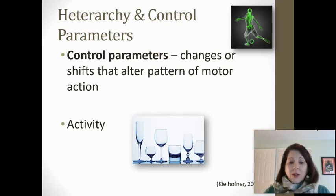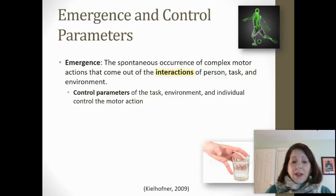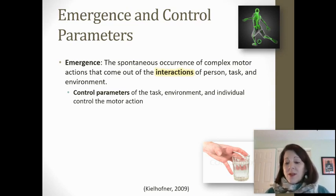Here's an activity regarding control parameters: go to the kitchen and get a bunch of different kinds of cups, glasses, and water bottles. Fill them with some water. If you have a partner, close your eyes and have them place one of these drinking containers in front of you, then go to pick it up and observe how the control parameters change the activity for you. This is called emergence — as we spontaneously change our complex motor actions because of the interactions with the task, the environment, and movement, we can see how control parameters are changing the motor action. Pause the video and discuss what control parameters of these various drinking objects are causing your movement to emerge in different ways.